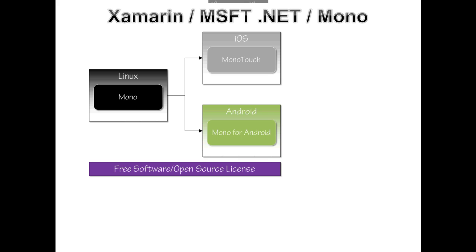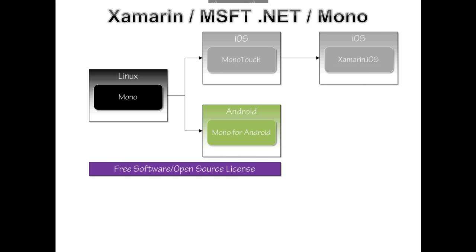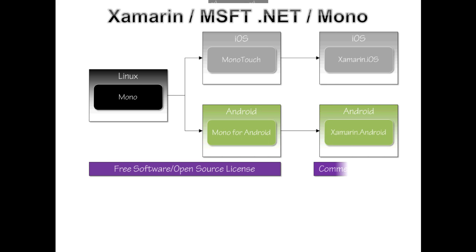Mono Touch eventually evolved into what we call Xamarin iOS — the Xamarin environment for iOS today. And for Android, we have Xamarin Android. The key thing is that these are both commercially licensed products. If you're going to build apps for real, these are things that you pay for. There are some free entry points, but largely there's something you pay for.